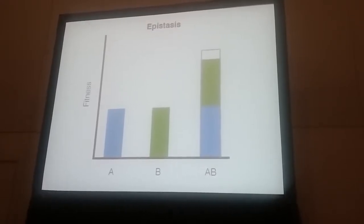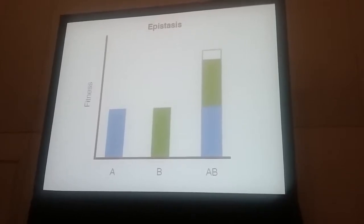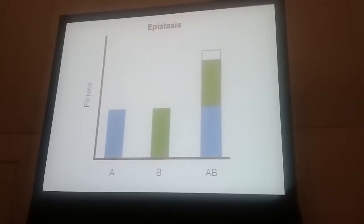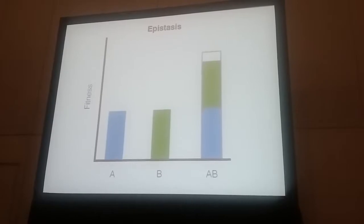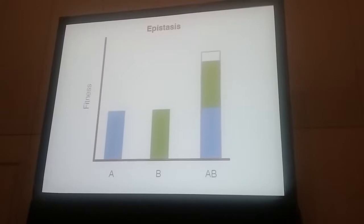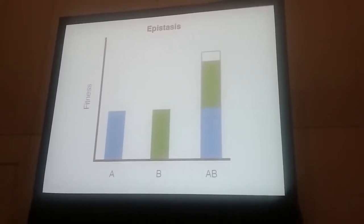Again, I have this case of the two alleles, A and B, and you can see that when you combine them, you get a fitness indicated by the top gray box that deviates from our expectation of combining the two. And so these epistatic interactions make that map very difficult to interpret.